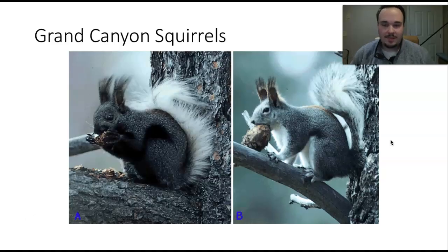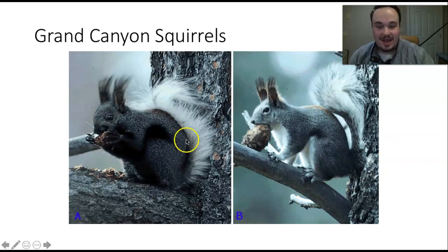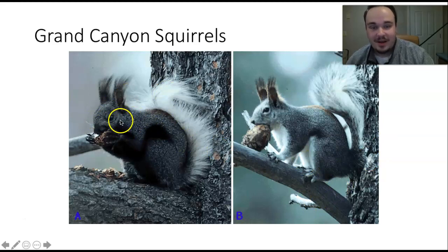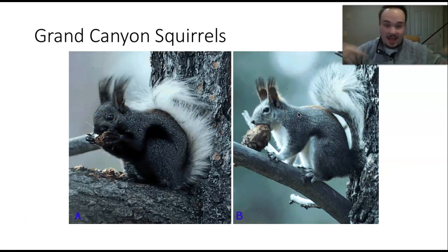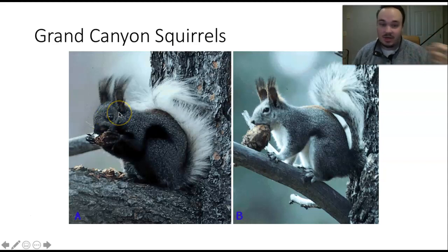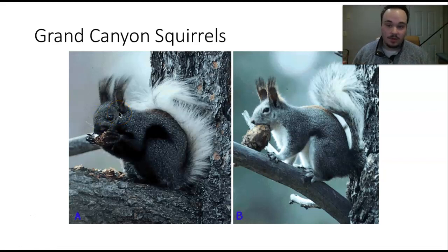Another example is the squirrels found on opposite sides of the Grand Canyon. Squirrel A lives on the western side and squirrel B lives on the southern side. The Grand Canyon is the geographic expanse they can't cross to reach each other. They look similar, but they are genetically distinct, never meet, and never breed together — so they are considered different species.